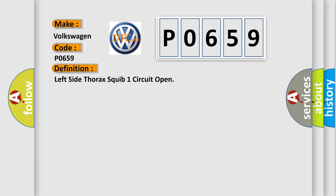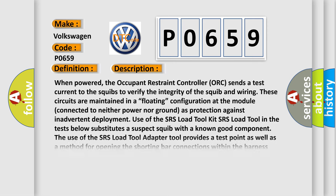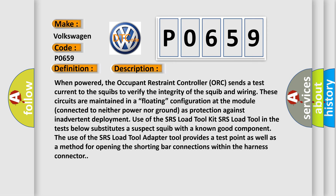The basic definition is: left side thorax squib 1 circuit open. When powered, the occupant restraint controller (ORC) sends a test current to the squibs to verify the integrity of the squib and wiring. These circuits are maintained in a floating configuration at the module, connected to neither power nor ground, as protection against inadvertent deployment. Use of the SRS load tool kit in the tests substitutes a suspect squib with a known good component. The SRS load tool adapter provides a test point as well as a method for opening the shorting bar connections within the harness connector.